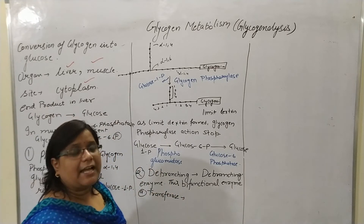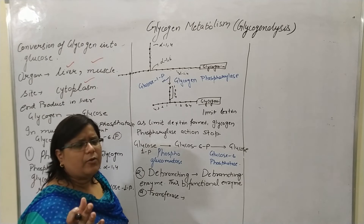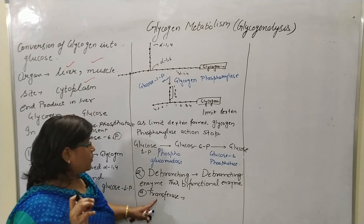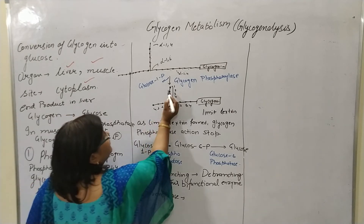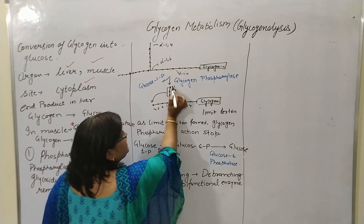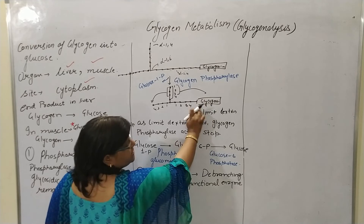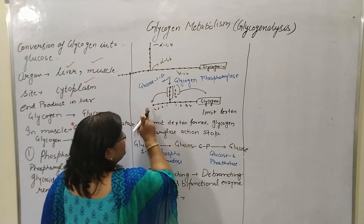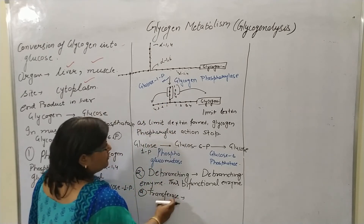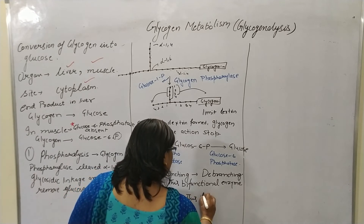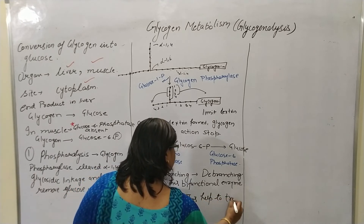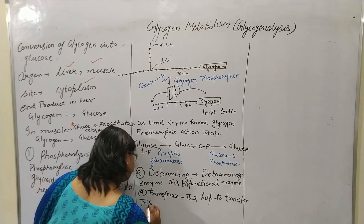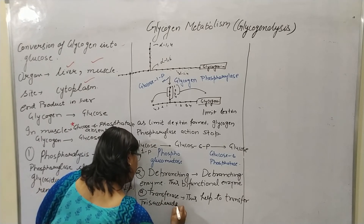The first subtype of the debranching enzyme is the transferase. The transferase (debranching enzyme part 1) transfers the trisaccharide to the linear side. This trisaccharide does not jump to the glycogenin side — that is a dead end. Instead, this trisaccharide unit joins with the linear side, which is performed by the transferase.